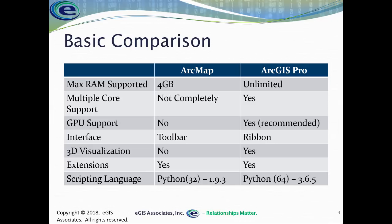The user interface with ArcMap is toolbar-driven — very 1990s, with multiple toolbars that can be easy to get lost in and aren't very intuitive for new users. Whereas ArcGIS Pro uses a modern ribbon like you see in Word, Excel, and even AutoCAD, which is more intuitive. Tools are presented as you need them instead of having to hunt through toolbars. Of course, those used to ArcMap's toolbars may find transitioning to the ribbon a bit difficult at first.